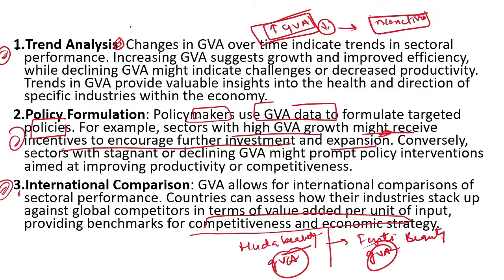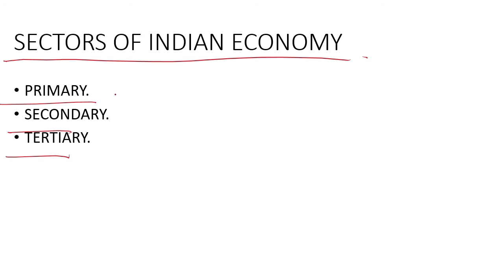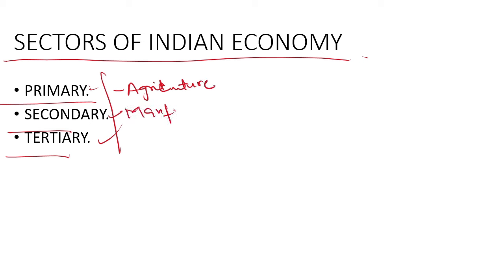Now, the sectors of the Indian economy. We have three sectors: Primary sector — agriculture and allied activities; Secondary sector — manufacturing; and Tertiary sector — the service sector.